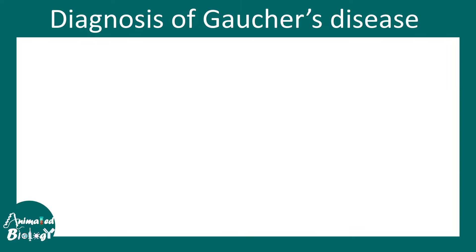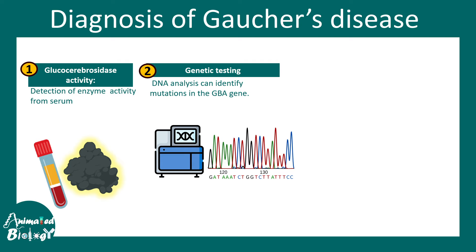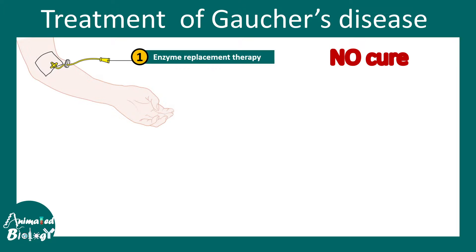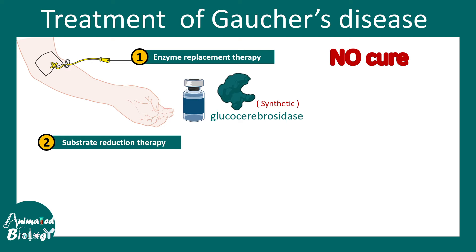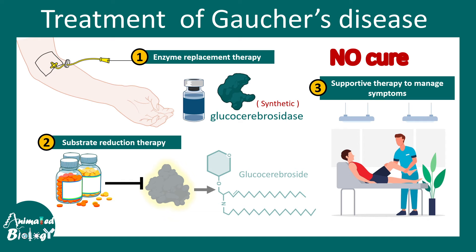Diagnosis of Gaucher's disease includes testing for gene mutations by sequencing methods, measuring glucocerebrosidase enzyme activity from a serum sample, and clinical history with classical symptoms. There is no cure, but enzyme replacement therapy using IV-infused synthetic glucocerebrosidase can help. Substrate reduction therapy — inhibiting the enzyme that generates glucocerebrosides — can also provide some benefit. Overall supportive management is used to treat symptoms.